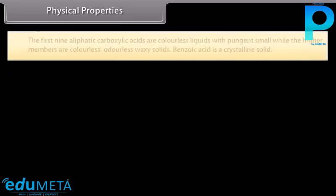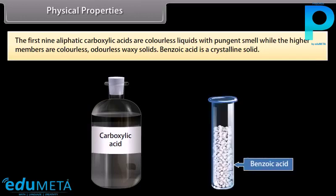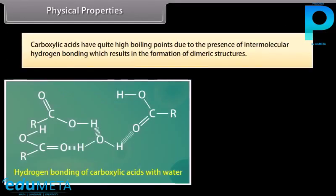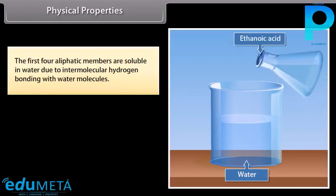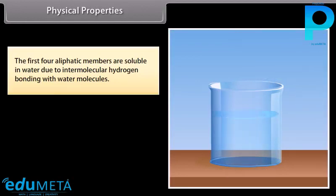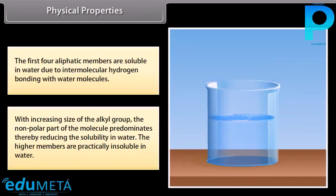Physical properties: the first nine aliphatic carboxylic acids are colorless liquids with pungent smell, while the higher members are colorless odorless waxy solids. Benzoic acid is a crystalline solid. Carboxylic acids have quite high boiling points due to intermolecular hydrogen bonding, which results in the formation of dimeric structures. The first four aliphatic members are soluble in water due to intermolecular hydrogen bonding with water molecules; with increasing size of the alkyl group, the nonpolar part predominates, reducing solubility in water, and the higher members are practically insoluble.